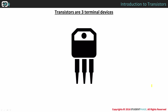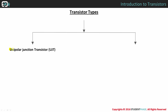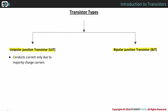Coming on to the types of transistors, there are two types: unipolar junction transistor, or UJT, and bipolar junction transistor, or BJT. In UJT, current is conducted only due to majority charge carriers.